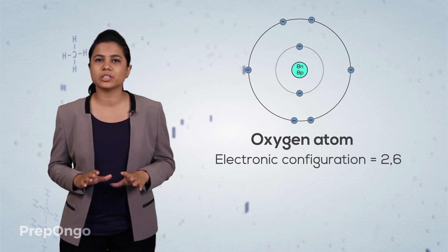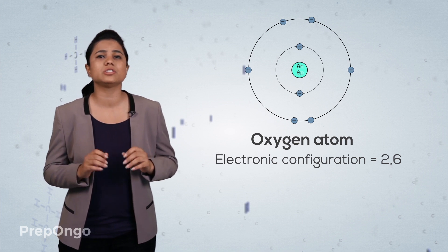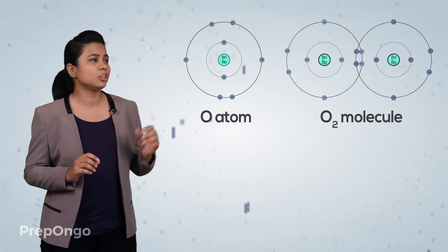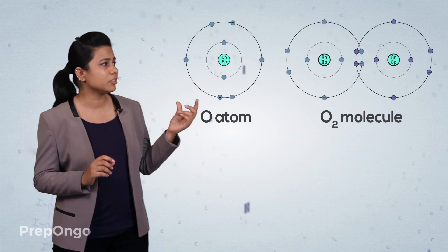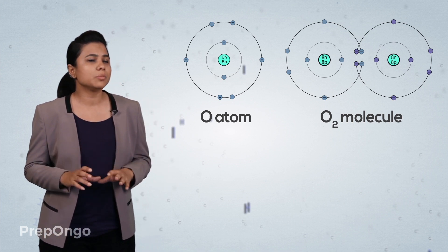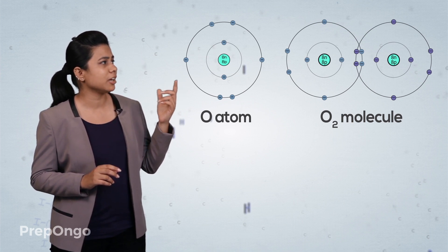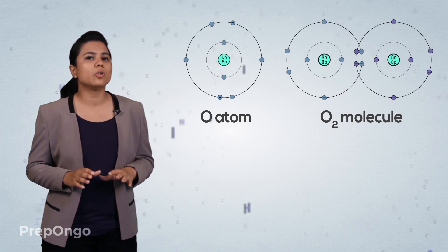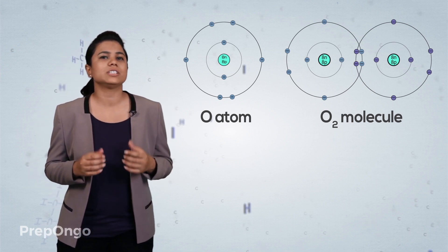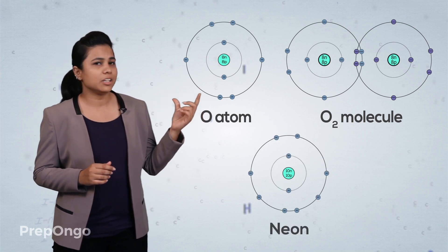Oxygen has an atomic number of 8, so its electronic configuration will be 2 and 6. From the configuration we know it will need two more electrons to gain the nearest noble gas configuration, which is of neon. So it will share two electrons from another oxygen atom. From the diagram you can see that two electrons are shared by each oxygen atom, while the remaining four electrons are not taking part in sharing, giving it an electronic configuration similar to neon.